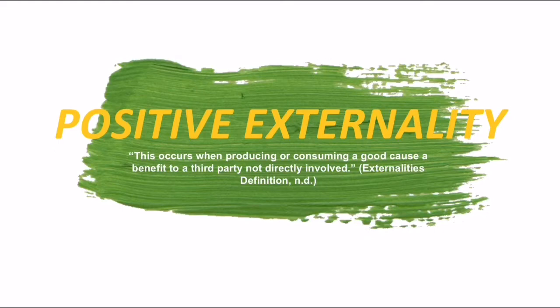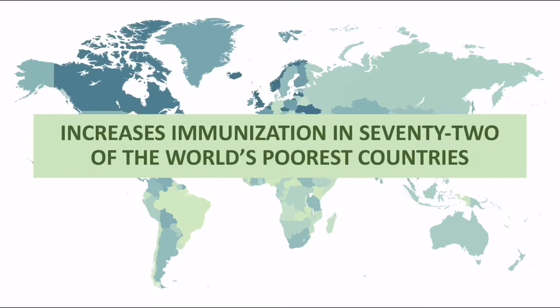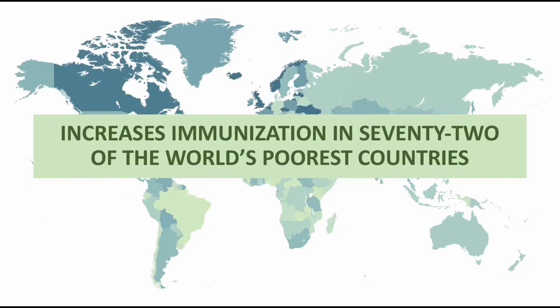Now let's discuss the example under this externality: the increased immunization in 72 of the world's poorest countries. Immunization rates have been largely increasing in the past decade, fueled by the Decade of Vaccines of the Bill and Melinda Gates Foundation. This growth is largely taking place in the developing world, as there is growing fear of vaccines in some developed nations like the United States, due to claims that it could cause death and autism, among other side effects.